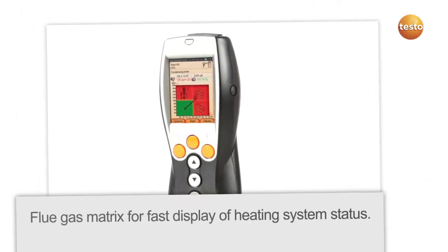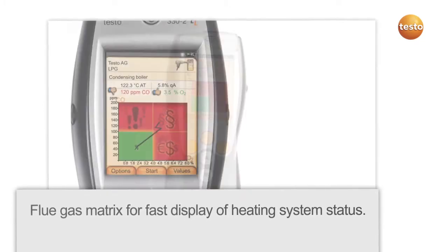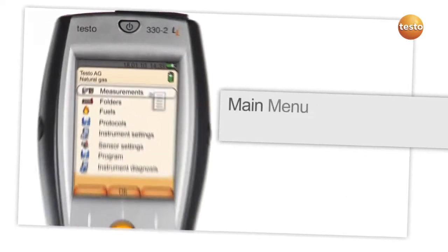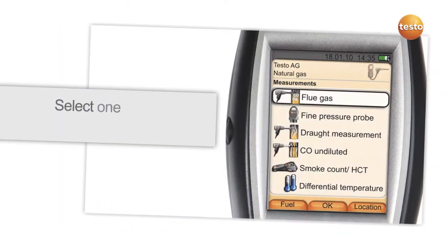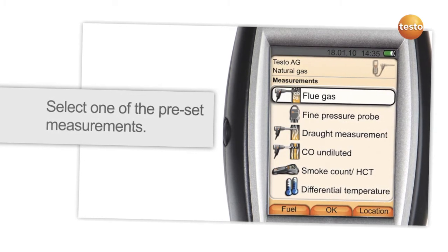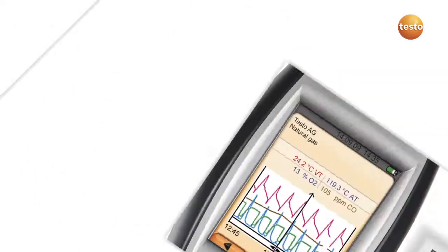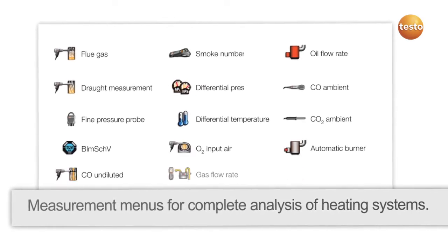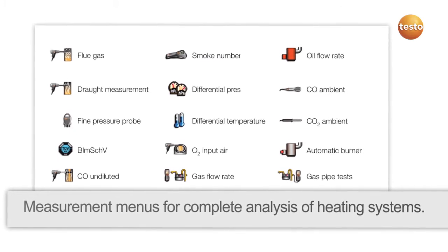The measurement data are clearly presented as a graph in the flue gas matrix, and thumb symbols show the status of the system. There are special measurement menus available. The measurement data can be displayed in different graphics and analyzed easily and quickly. The extended measurement menus allow a comprehensive analysis of the heating system, and measurement data are clearly visualized on the display.